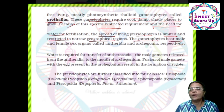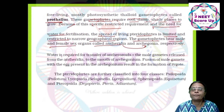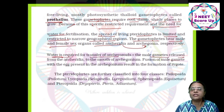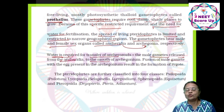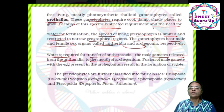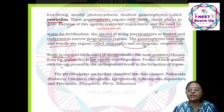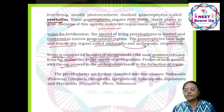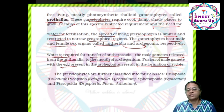The gametophyte bears male and female sex organs called antheridia and archegonia. Water is required for transfer of antherozoids — male gametes released from antheridia — to the mouth of archegonia. Fusion of male gamete with the egg present in the archegonia results in the formation of a zygote.